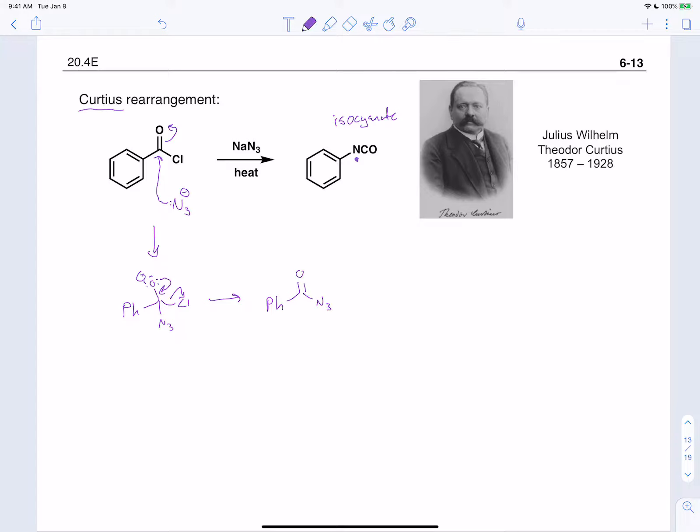So we've never seen an acyl azide before. Turns out they're thermally unstable. As you heat them up to about 100 degrees Celsius, they start to lose nitrogen spontaneously. To see how the rest of this mechanism works, we really want to go and draw out the azide a bit more explicitly.